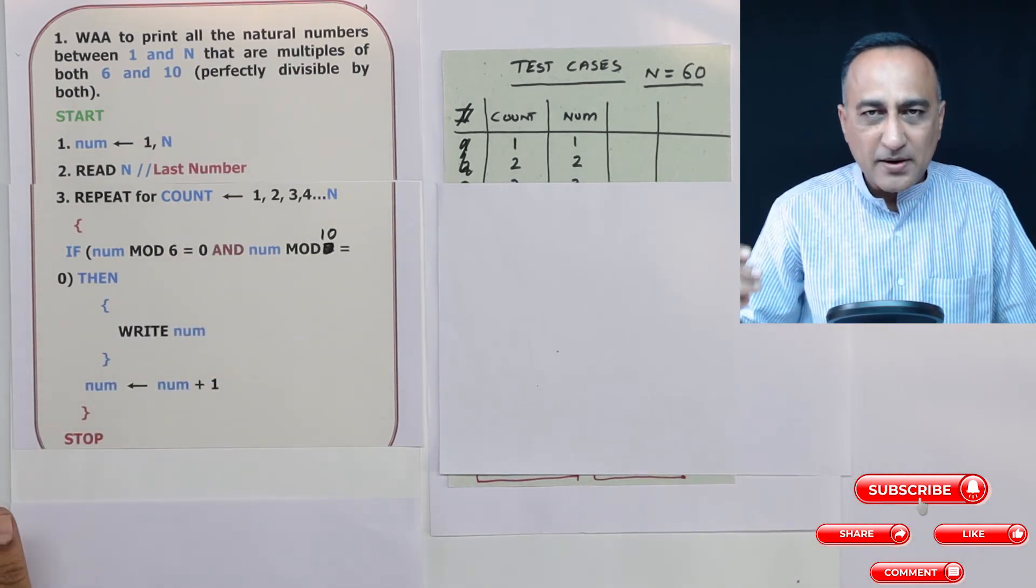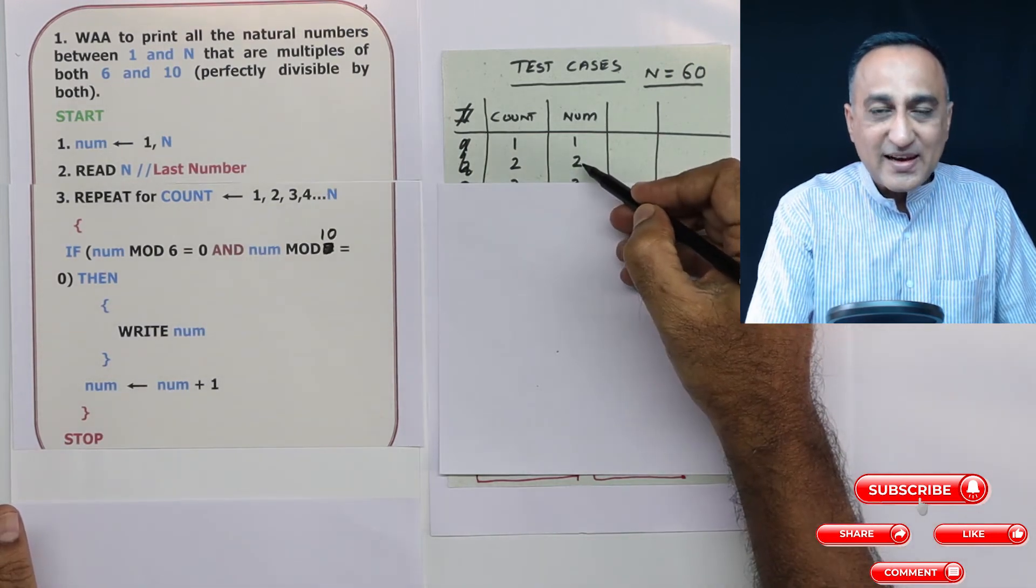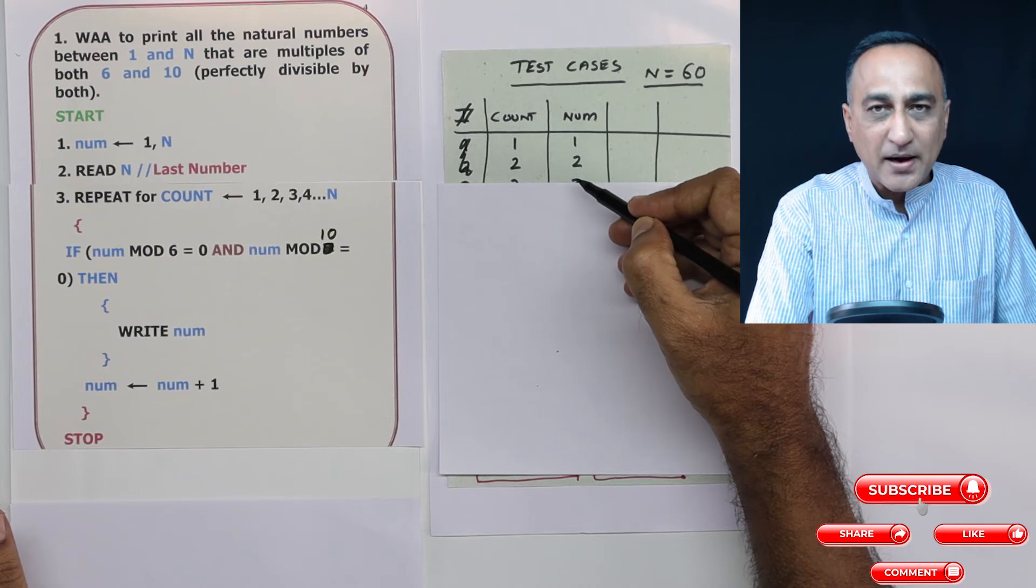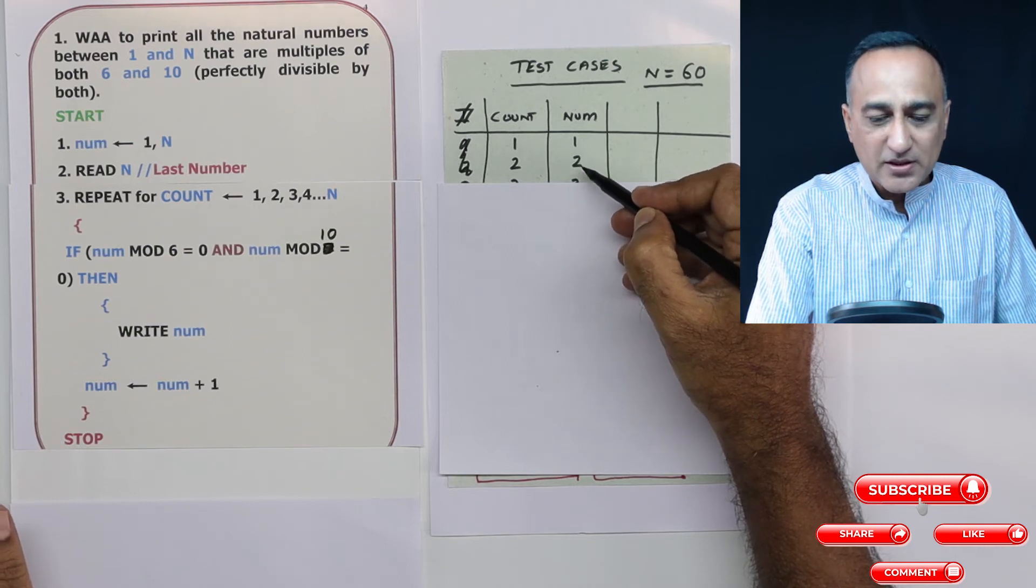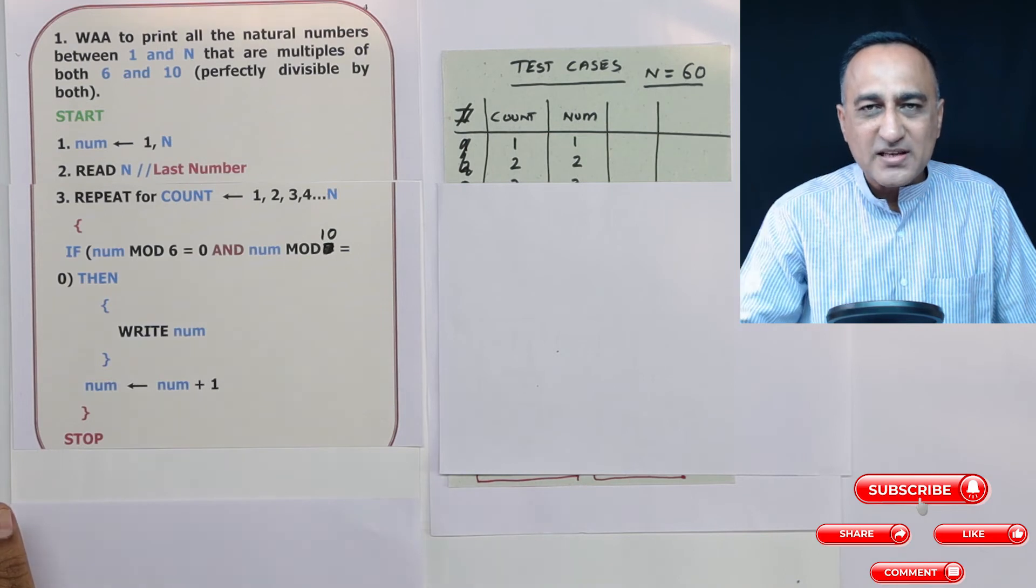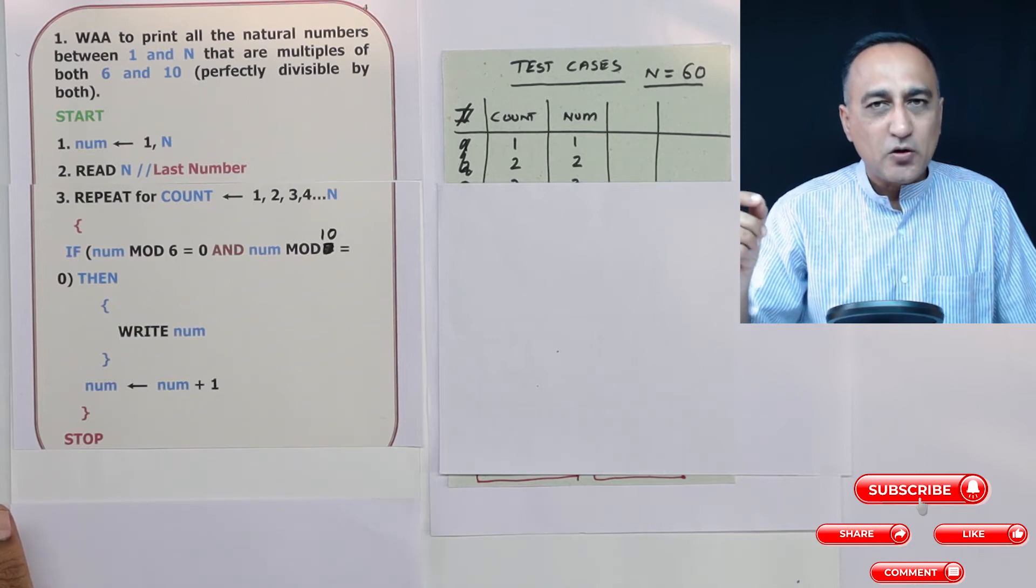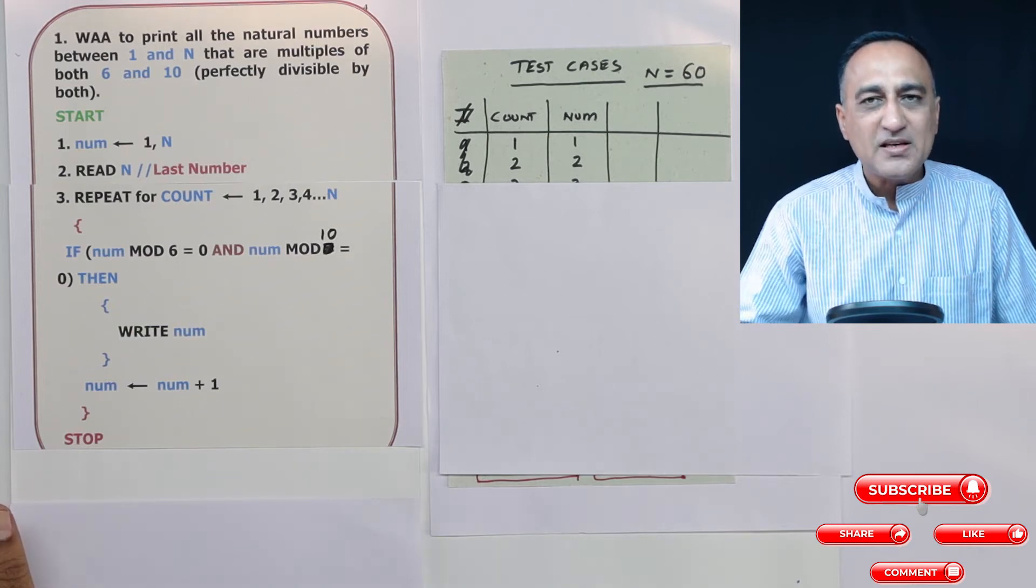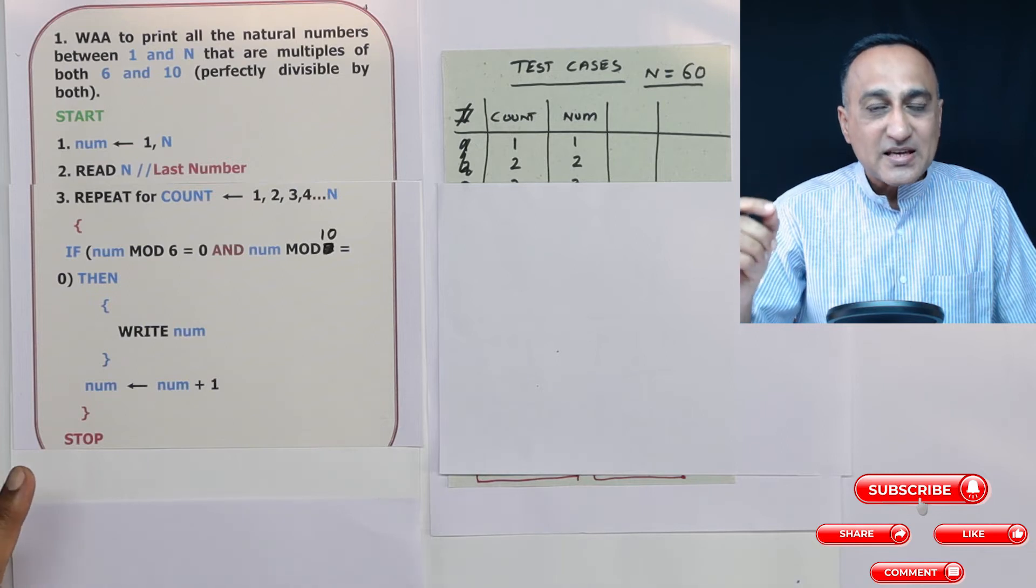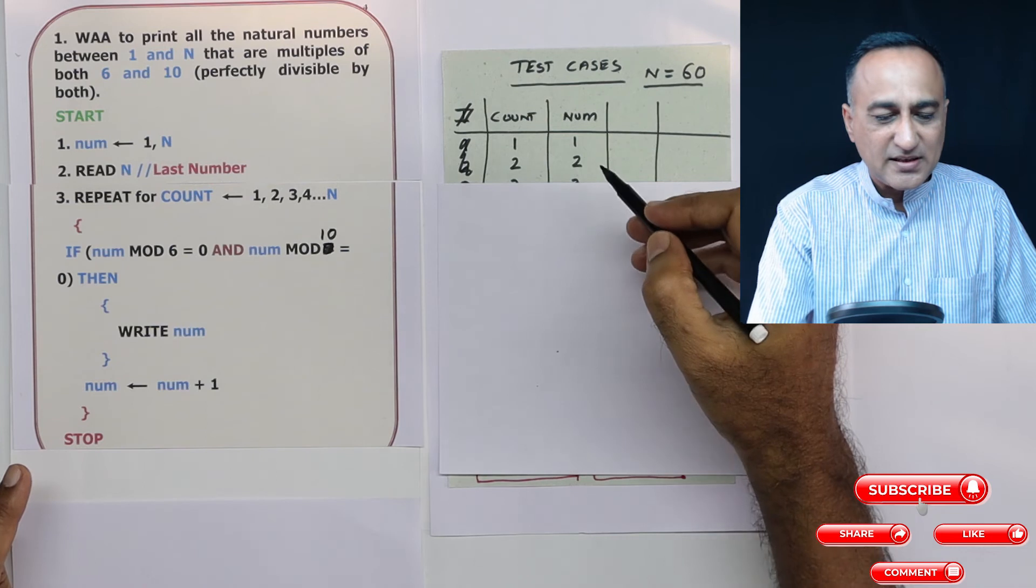For the mod or remainder operation, understand: if this number is less than the number you're trying to divide by, it is going to remain the same. That means five mod six, the remainder is going to be five. Six mod six, the remainder is going to be zero. Two mod six, the remainder is going to be two. Seven mod six, remainder is going to be one. So just understand this concept.